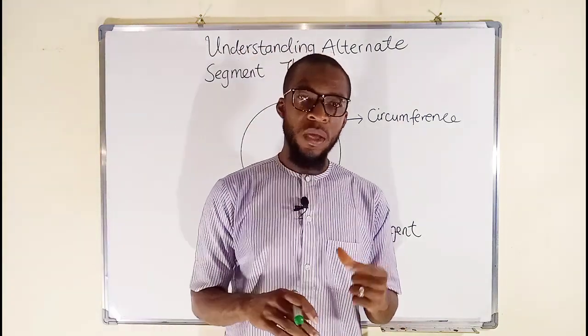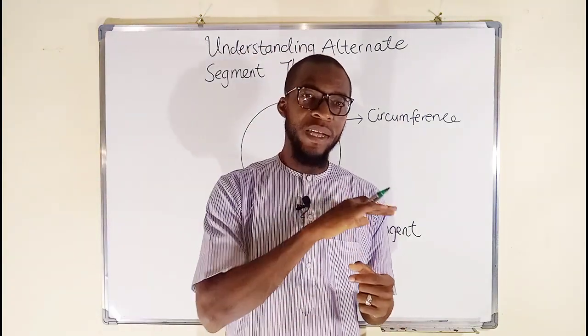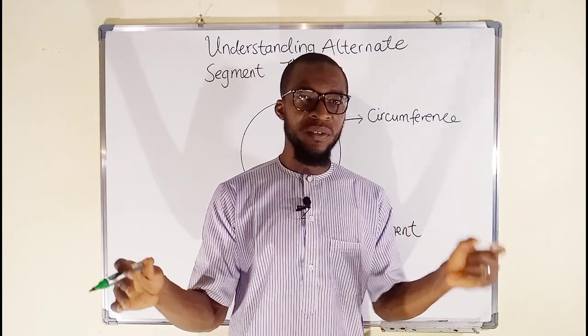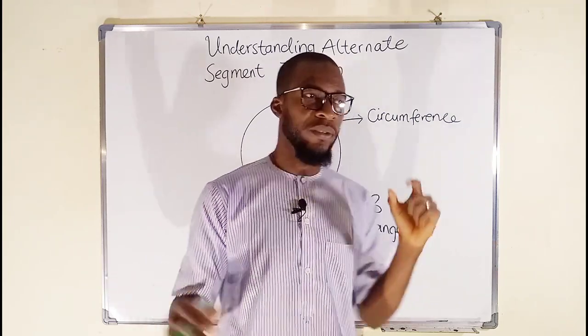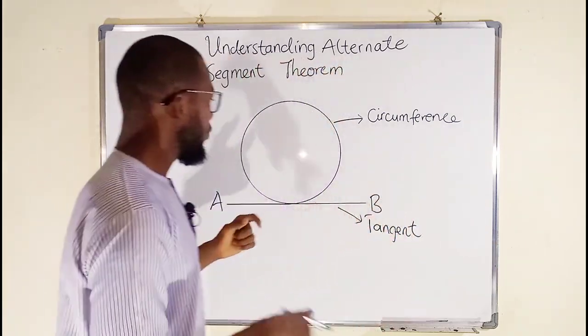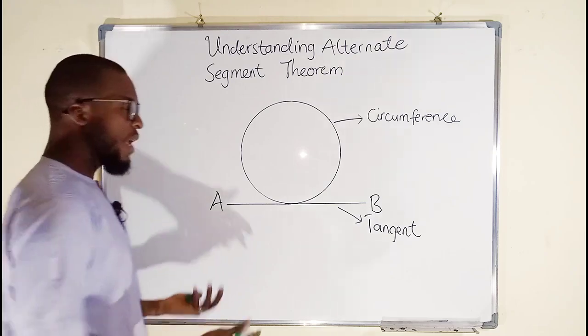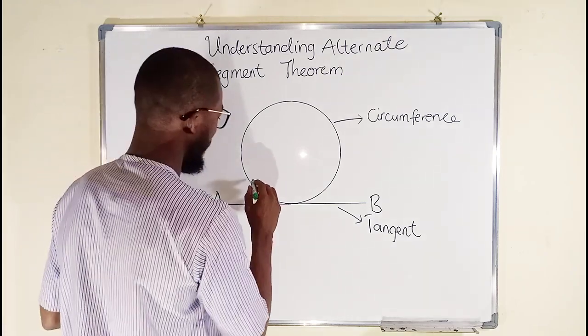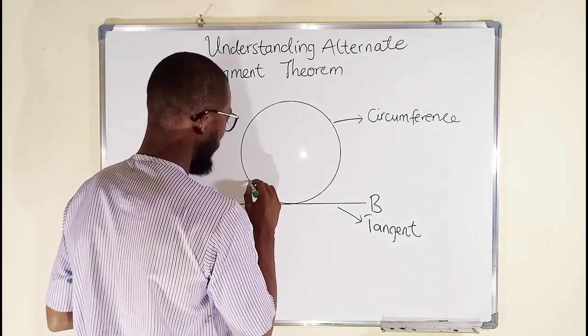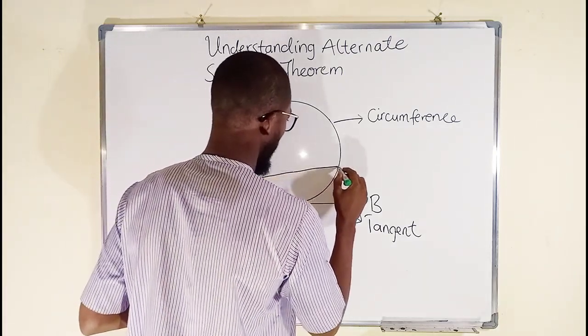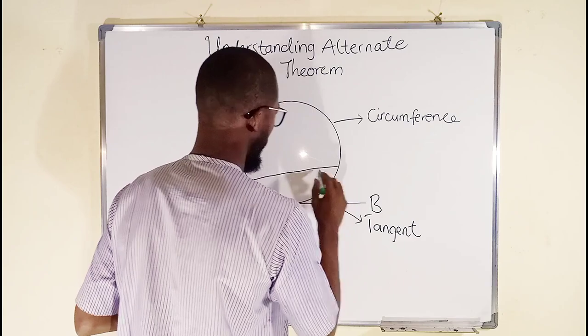We also need a chord. A chord is a line that passes through a circle, touching the circumference at two points. So it could even be a diameter, or any other line. For example, this is a chord.